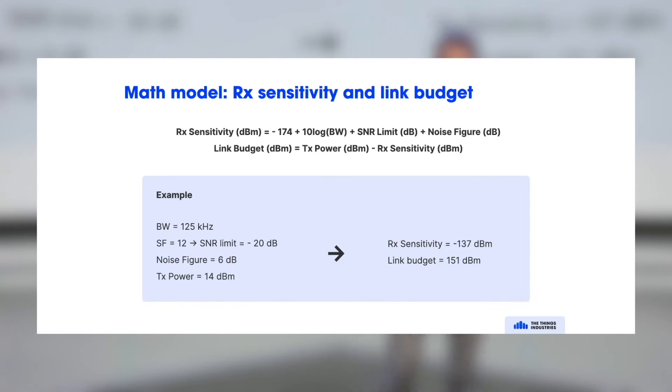There is a signal to noise ratio limit of 20 dB, sorry, minus 20 dB. Noise figure, 6 dBm. That's a characteristic of the end device. And then when the receiver uses 14 dBm, you can calculate that the receiver sensitivity is minus 137 dBm.